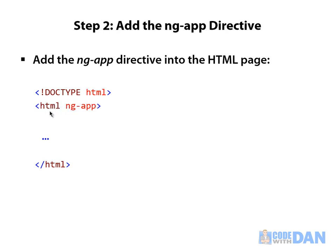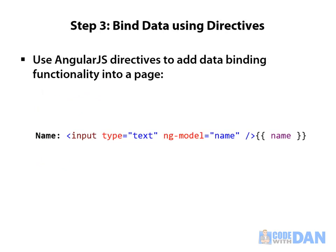You could add ng-app on the root HTML tag, or down on the body tag if you want. But normally I put it up top to make it available throughout the whole entire shell page. That will mark it as an Angular application, and by doing that you can do things like data binding.